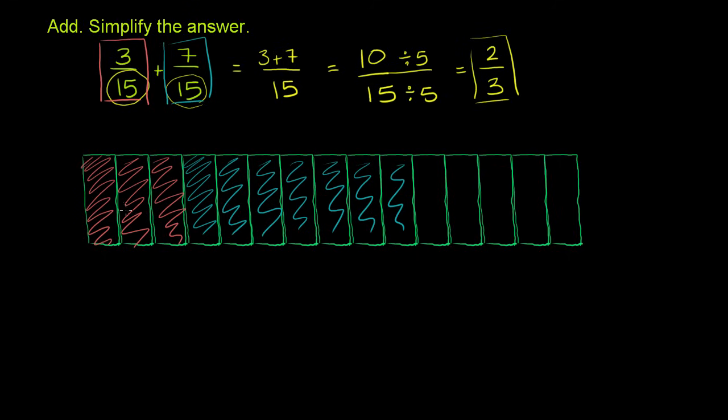And you see now, if you take the orange and the blue, you get one, two, three, four, five, six, seven, eight, nine, 10 of the sections, or 10 of the 15 sections.